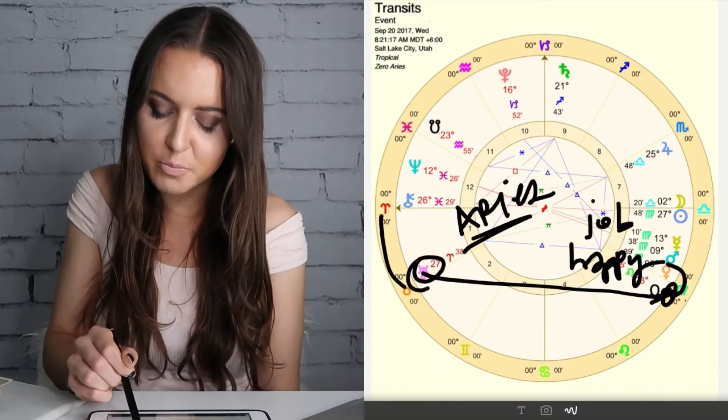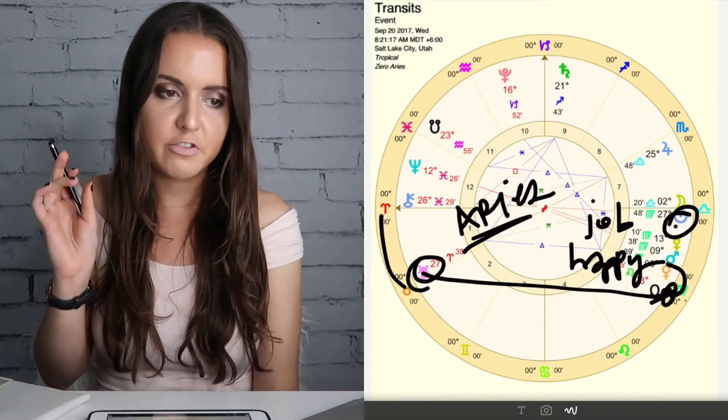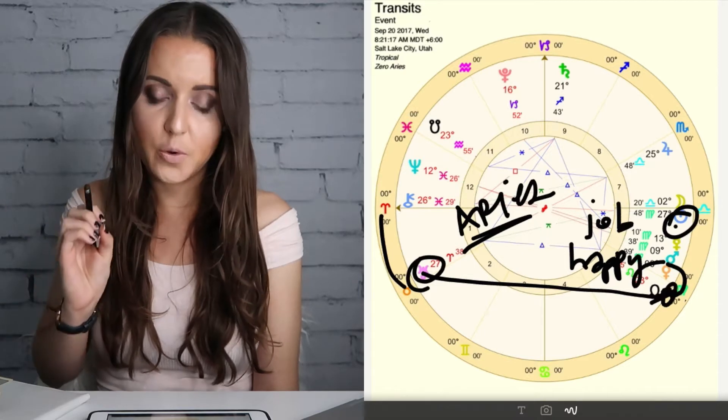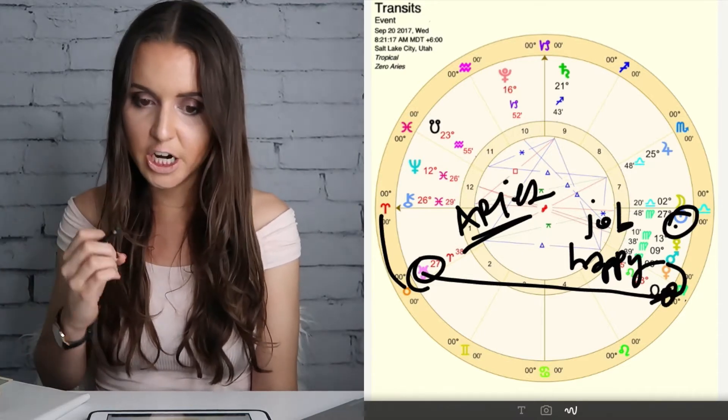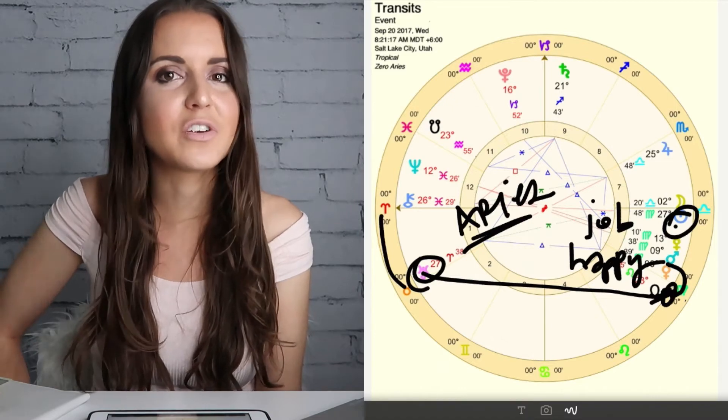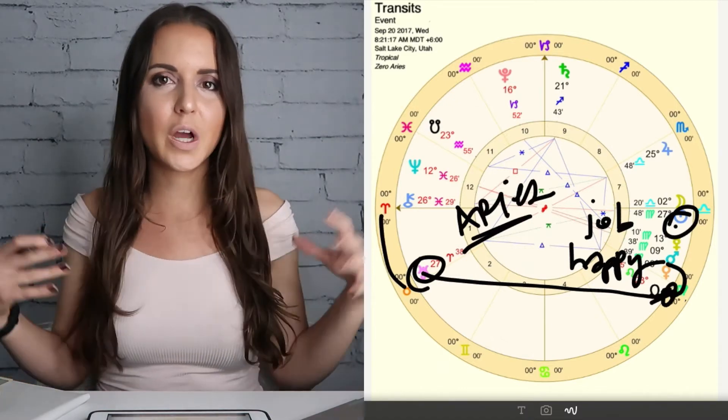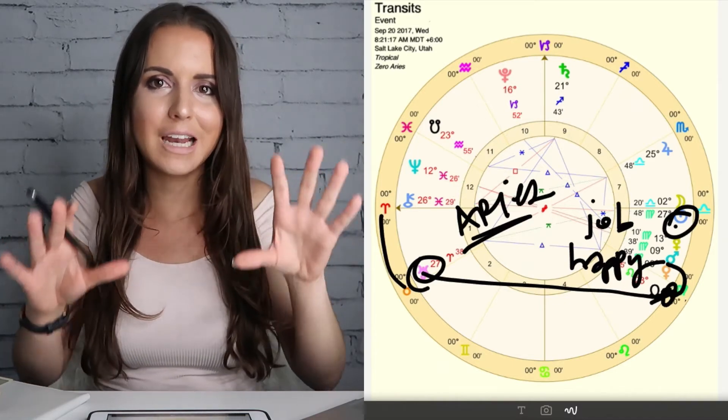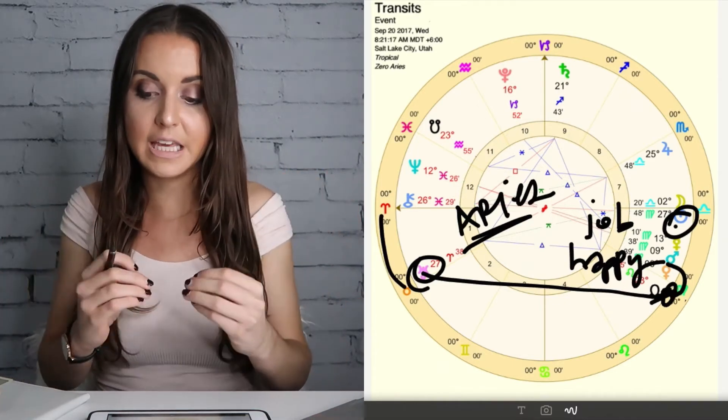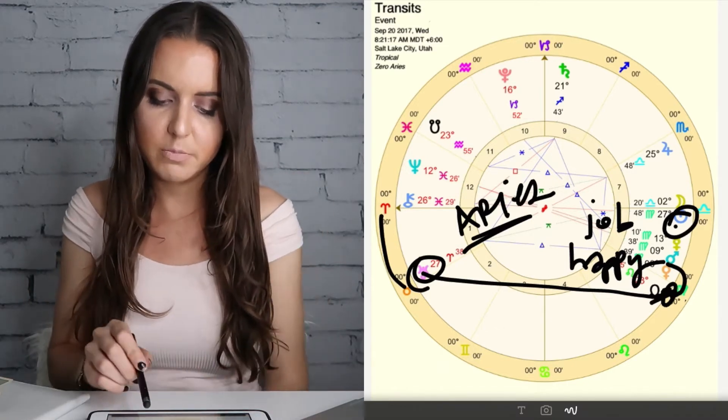We also do have a new moon here at the very last degrees of Virgo in your sixth house too, really bringing up a lot of new beginnings for you at work in your daily routines, trying to do new things and just organize your life differently. And I think you're trying to take some of this stuff that makes you happy, that you want and enjoy and just do it more and put the hard work in into making it manifest and making it happen.